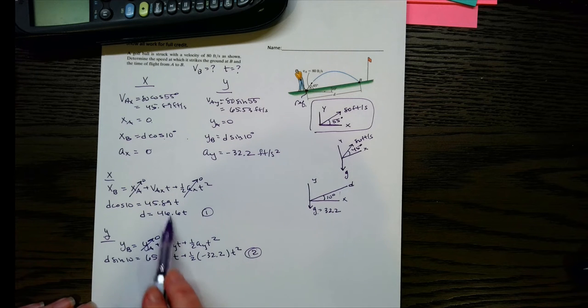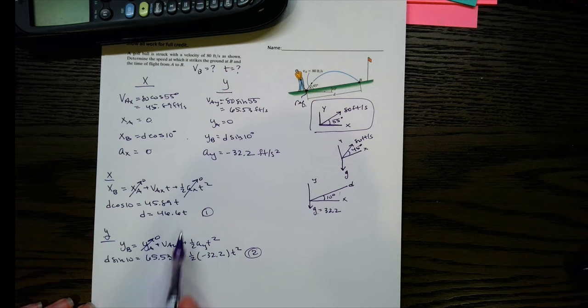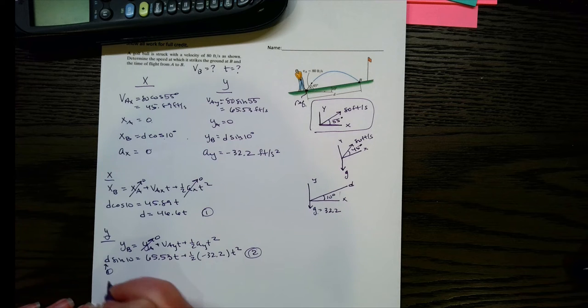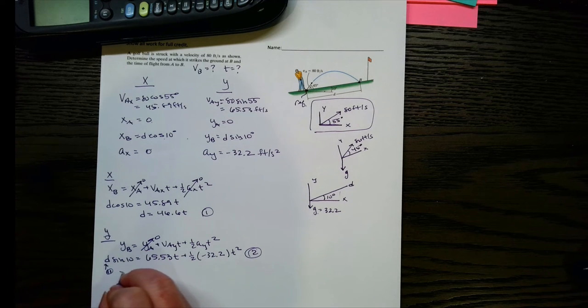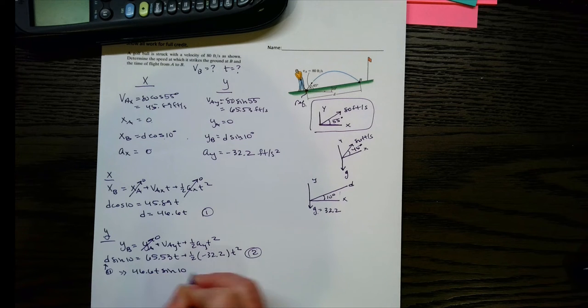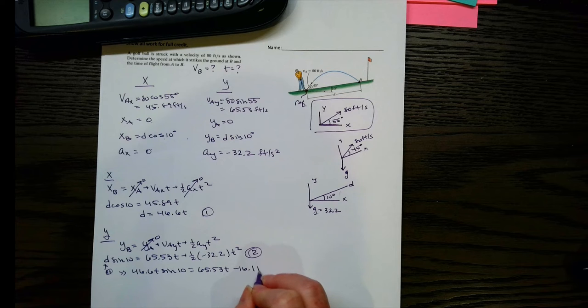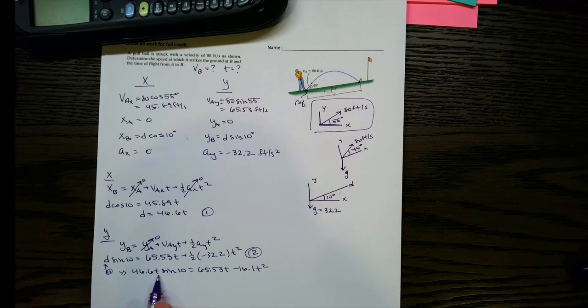Now notice I've got these two equations. I've got two unknowns. d and t are both the unknowns in these equations. So I'm going to take equation 1 and plug it in right here. So if I do that, I get 46.6 t sine 10, and then equals this right hand side. This last term goes to negative 16.1 t squared. Notice now I've got one unknown, which is t.